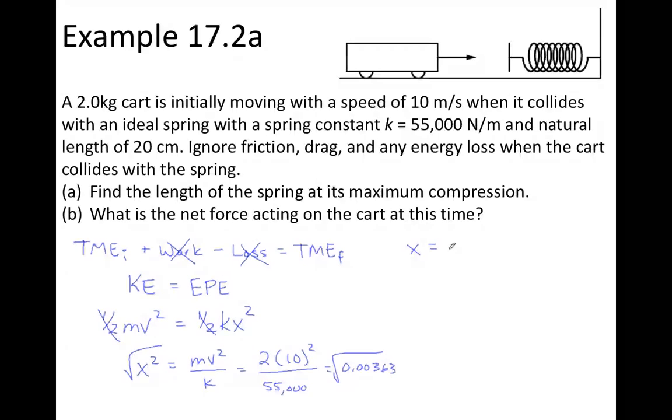So when we take the square root, I get 0.06. Now that's a distance, so that's measured in meters. And we should note that this value of x, that's the compression distance. That's not what we wanted. We want to know the length. So this in centimeters is 6 centimeters. The spring starts as 20 centimeters, so the length of the spring is going to be that 20 centimeters minus the 6 centimeters that it is compressed. So at the very end, the length of the spring is reduced to 14 centimeters.